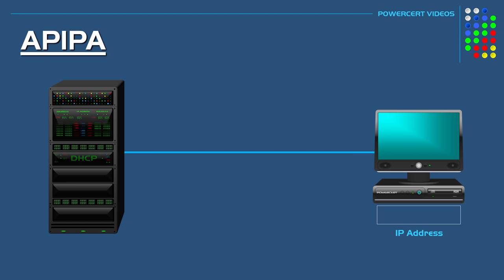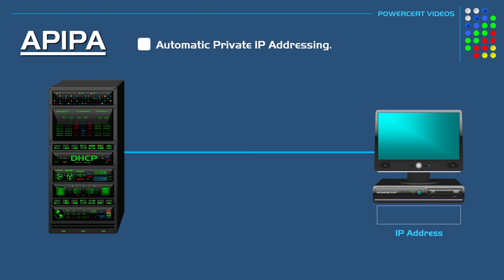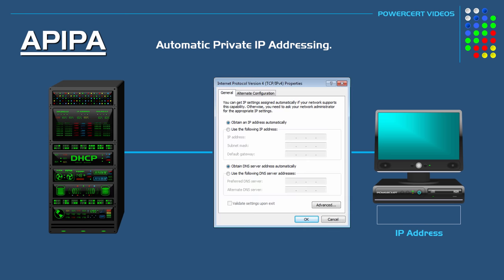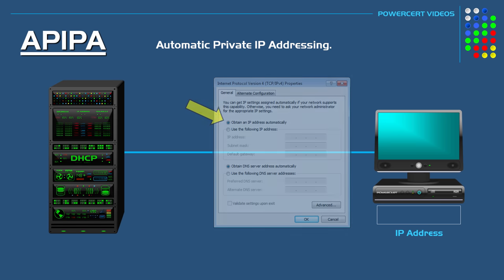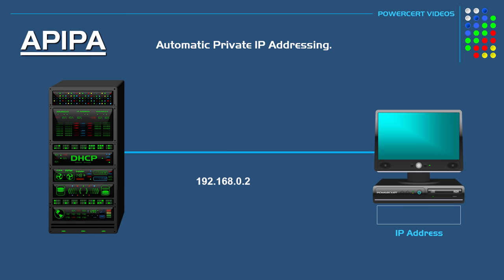Hello everyone. In this video we're going to be talking about APIPA, which stands for Automatic Private IP Addressing. Every computer has to have an IP address to communicate on a network. When a computer is set to automatically obtain an IP address, it gets the IP from a DHCP server. But what happens if the computer can't reach the server?